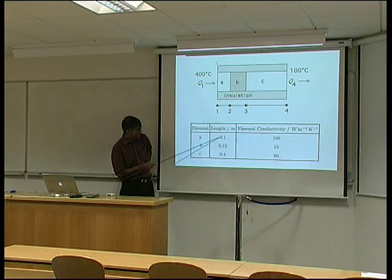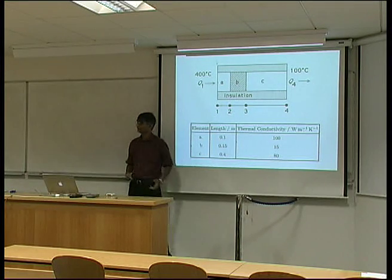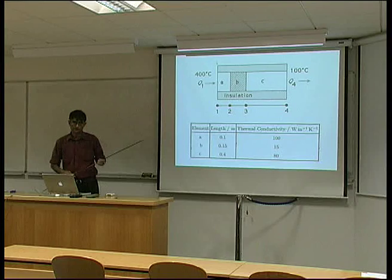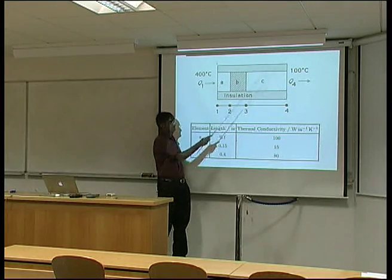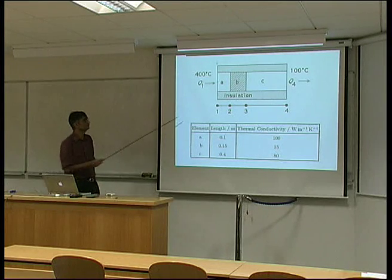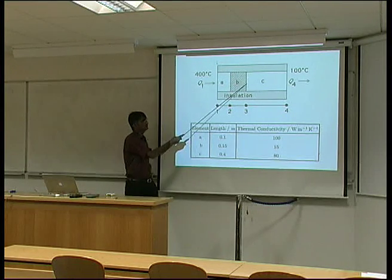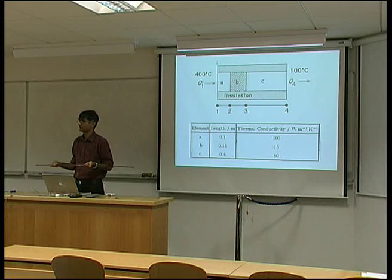The lengths are given over here, 0.1 meters, 0.15 and 0.4 meters, and these are the three different thermal conductivities. We know the temperature here is 400 degrees centigrade. Over there, it's 100 degrees centigrade, and the problem is to find the temperatures here and here, and also to calculate how much heat is flowing through the bar at any time.